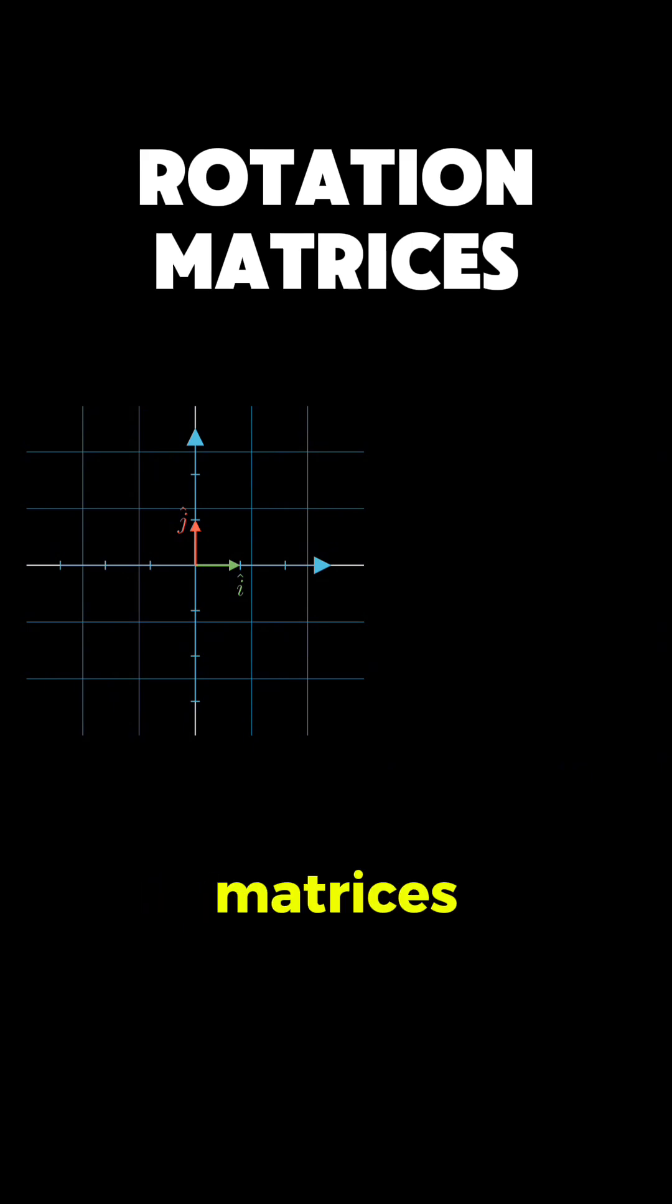To see how rotations work as matrices, let's watch what happens to our basis vectors i and j.